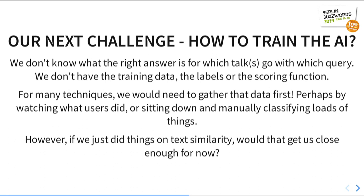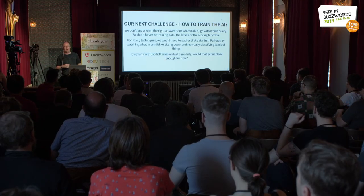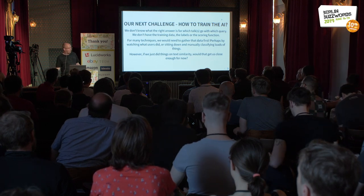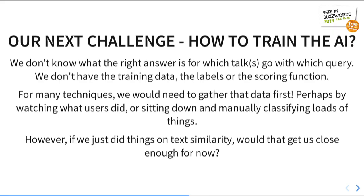But my next challenge is that I don't actually know what the right answer is. I haven't gone around to all of you and asked which talks you wanted to see and which search terms you were looking for. I haven't asked all the new starters on my projects at work what they were trying to find. I can feed that in later, but right at the moment I don't know the right answer. So I can't do a simple classification — I can't train the model and say 'here is my query, here is the talk that you should match.' So I have to do a little bit of fuzziness — we're going to start with simple text similarity, the same kind of way it works in Lucene, Solr, and Elastic.